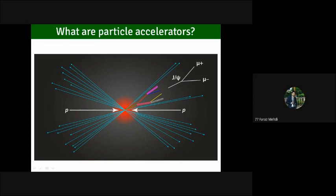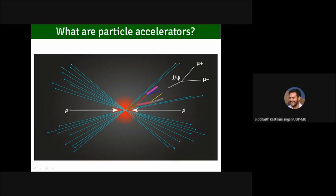Student: We accelerate particles to a velocity comparable to the speed of light and then we collide them to see the results. Instructor: Yes, that is what you do if you are a particle physicist. However, many parts of what you said are not necessary — for example, you need not collide two beams of particles with each other.